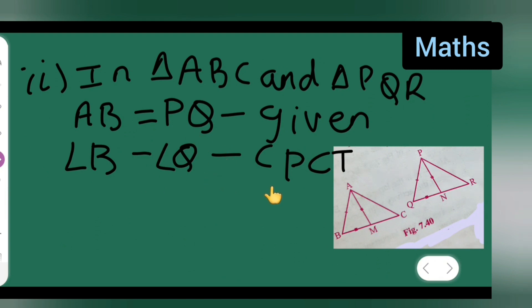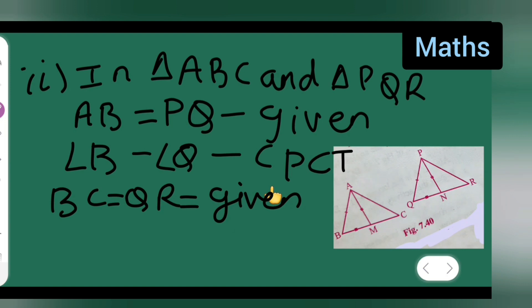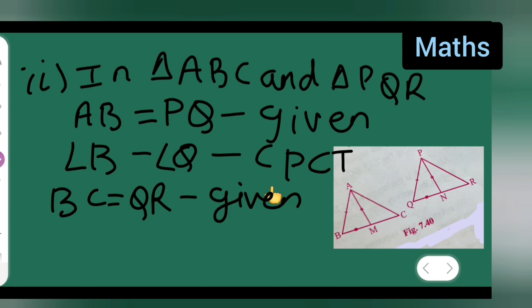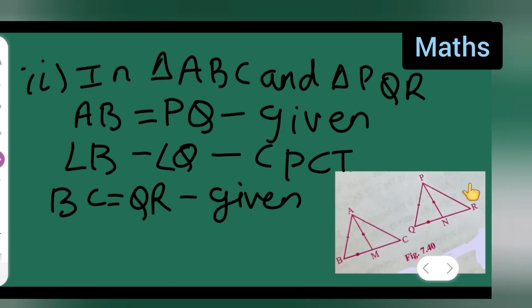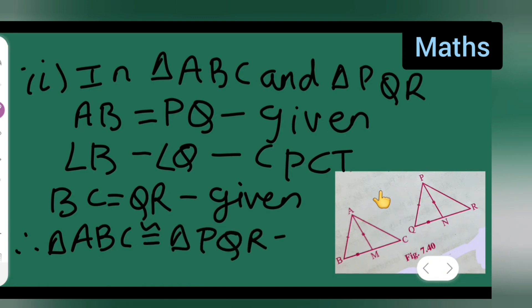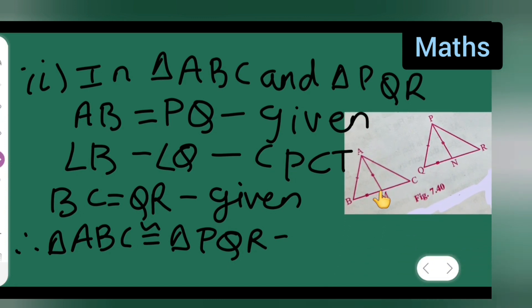Next, BC = QR, which is given from the question. Now we have taken the entire triangle. Therefore, triangle ABC is congruent to triangle PQR by the Side-Angle-Side (SAS) rule.